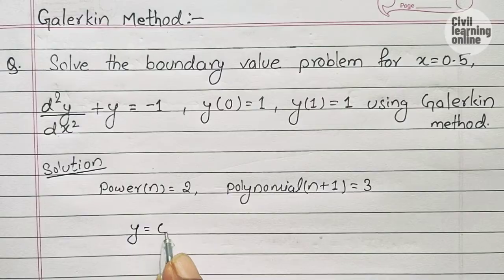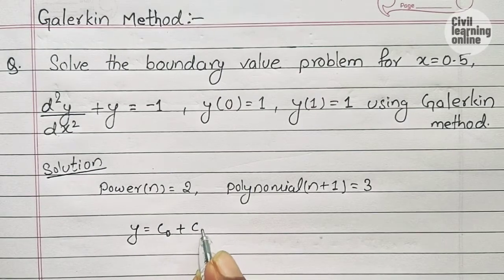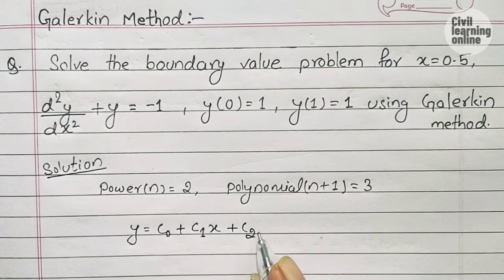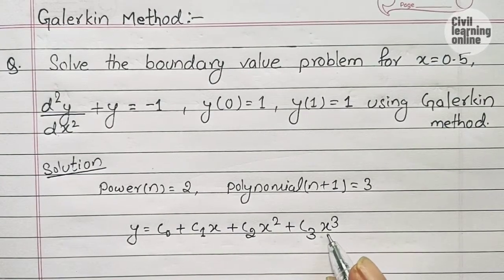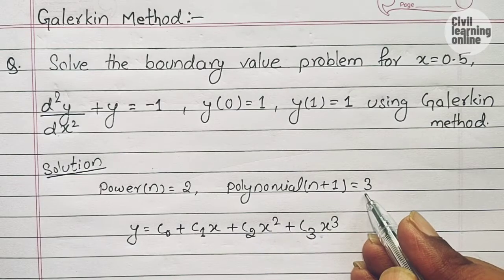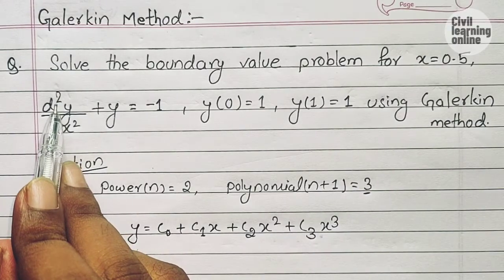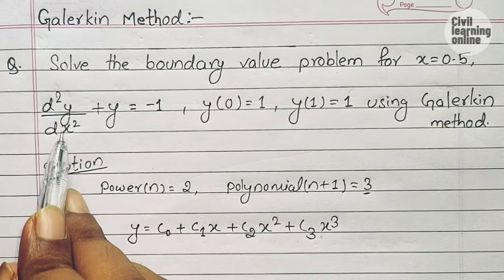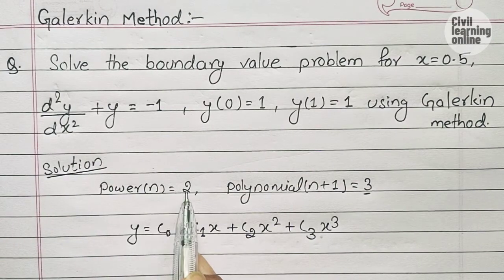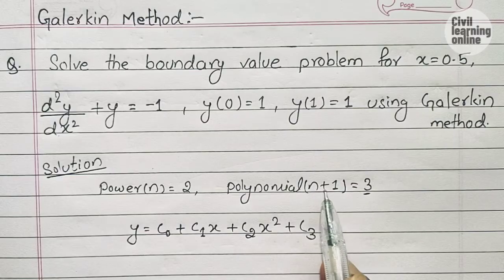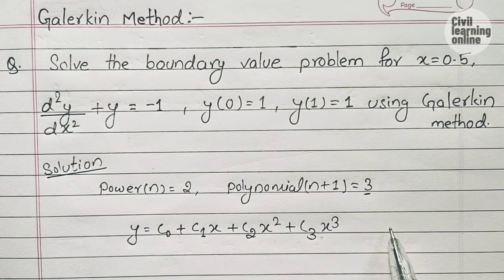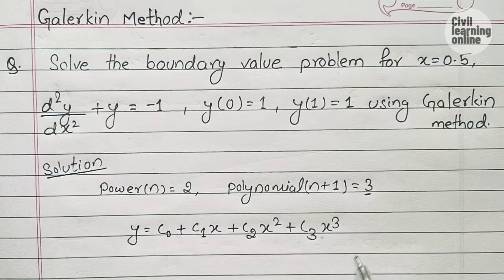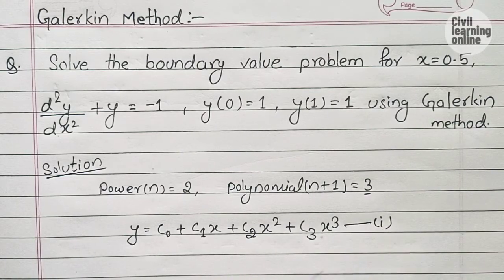We consider the trial function equation: y = c₀ + c₁x + c₂x² + c₃x³. We take it up to power 3 because the polynomial degree equals 3. For example, if it were d³y/dx³, then n would equal 3, polynomial would become n+1 = 4, and we would need to add one more term c₄x⁴.